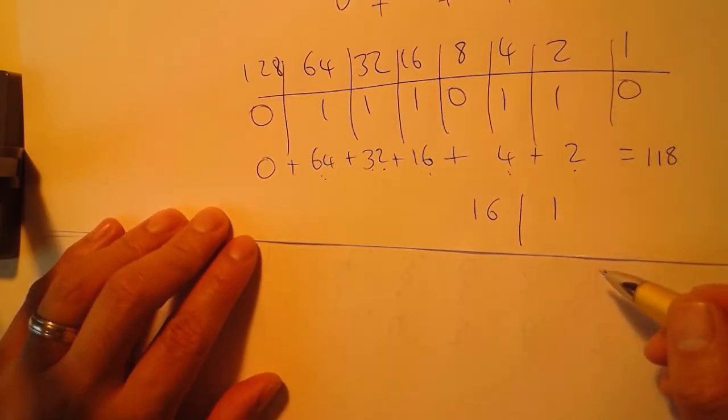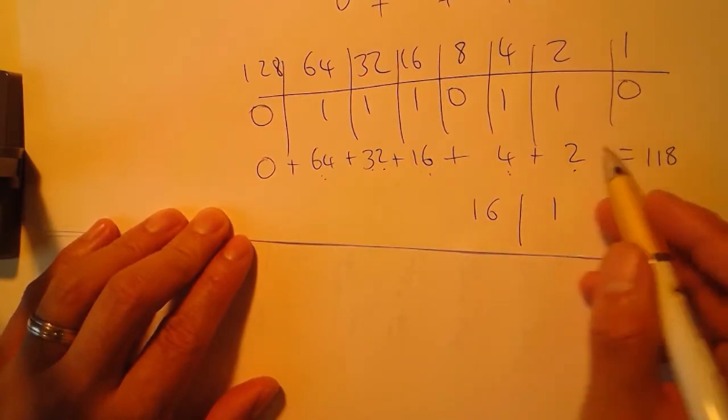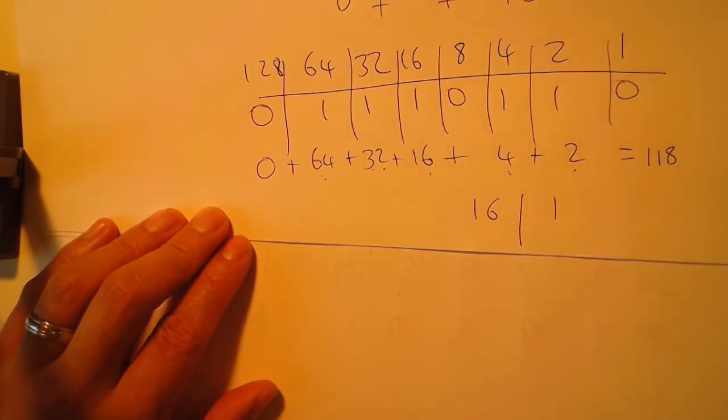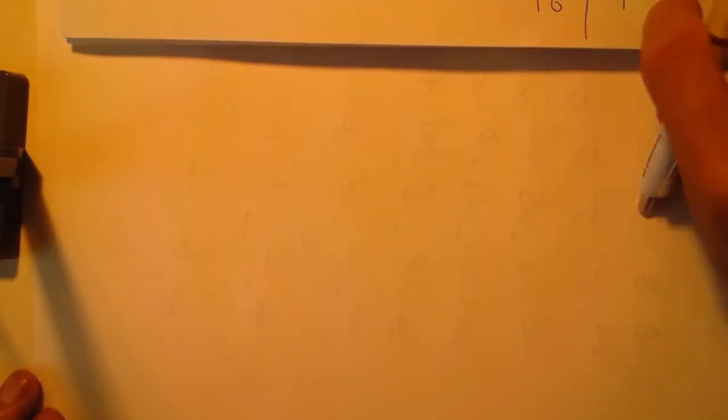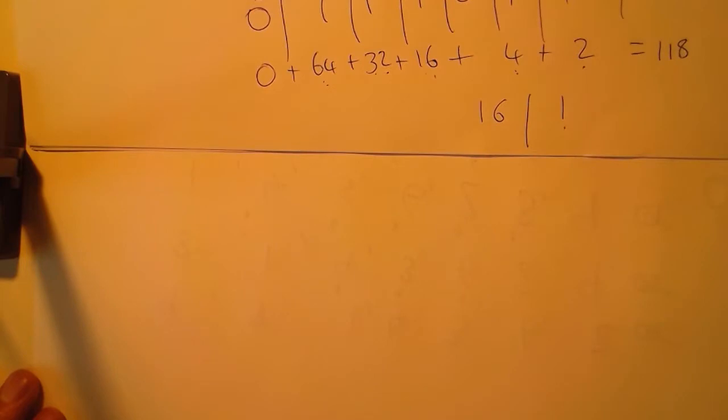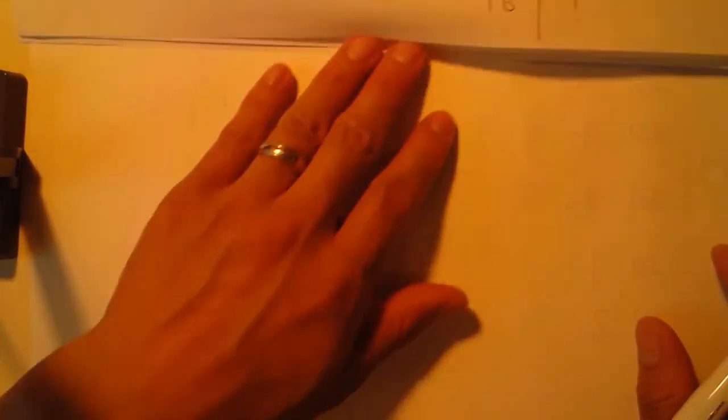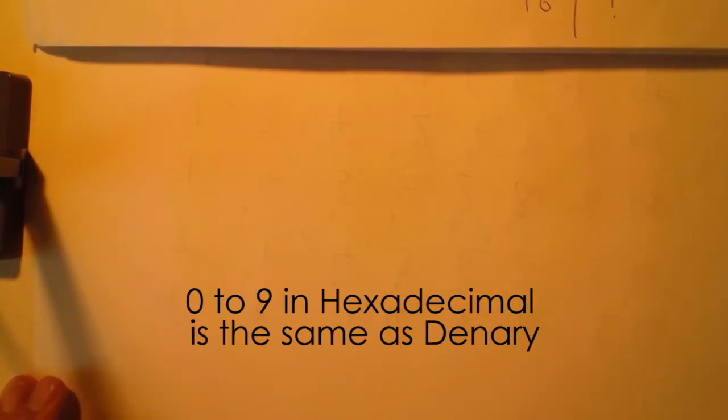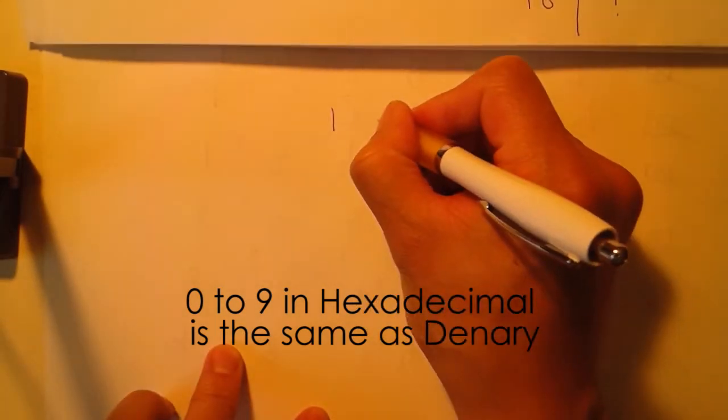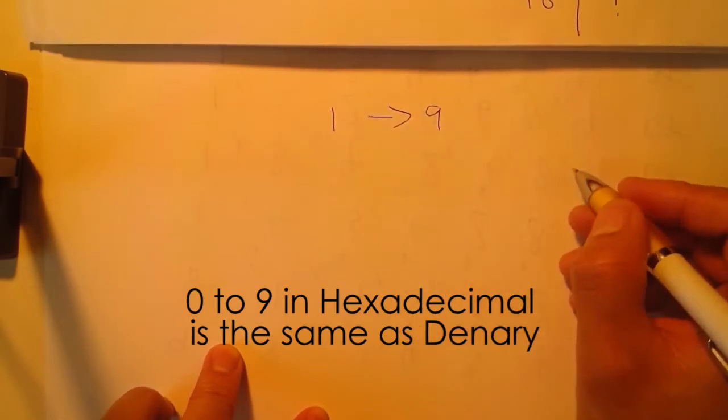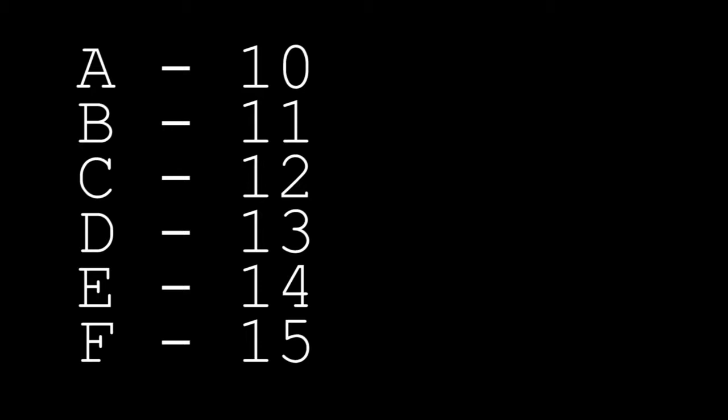It's probably worth first understanding how hex works. Given that we can only have single digits, how are we going to represent the numbers one to fifteen in one column? It's simple. One to nine is exactly the same as denary, and then when we get to ten we say A, B, C, D, E, and F. A represents ten, B is eleven, C is twelve, D represents thirteen, E represents fourteen, and F represents fifteen.